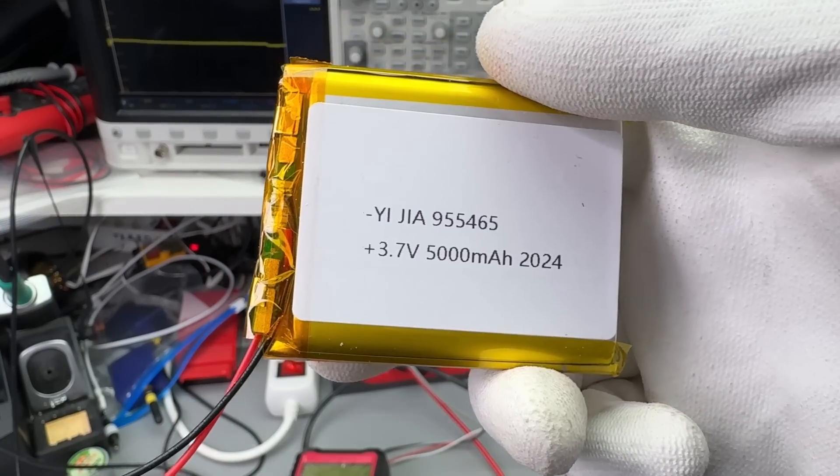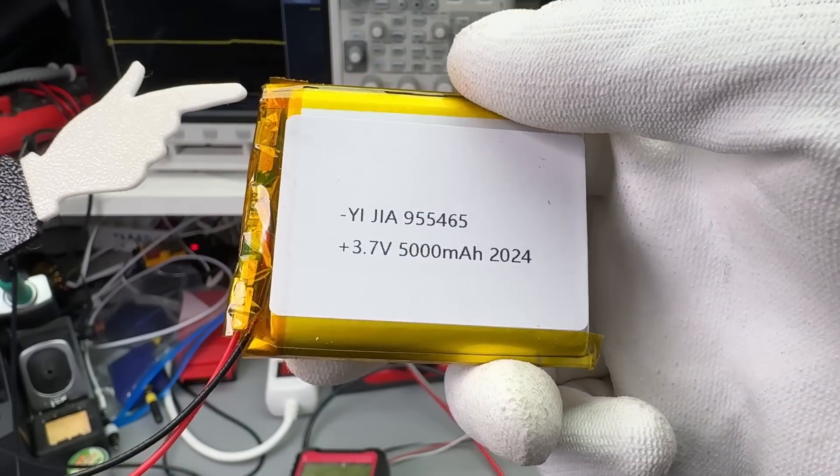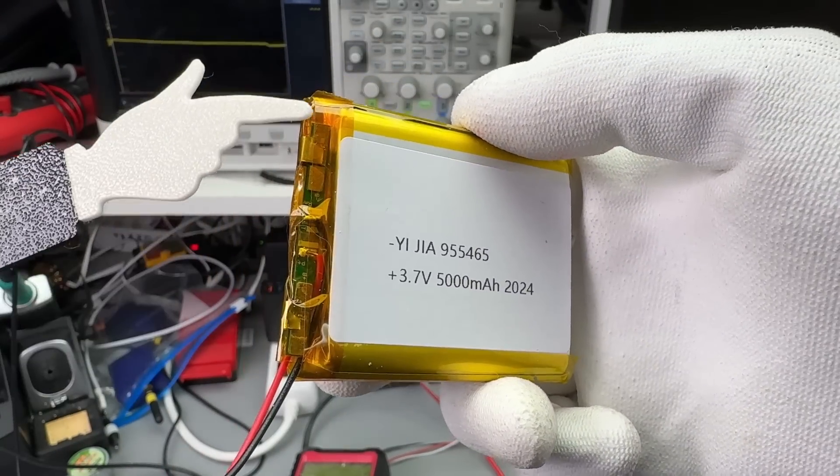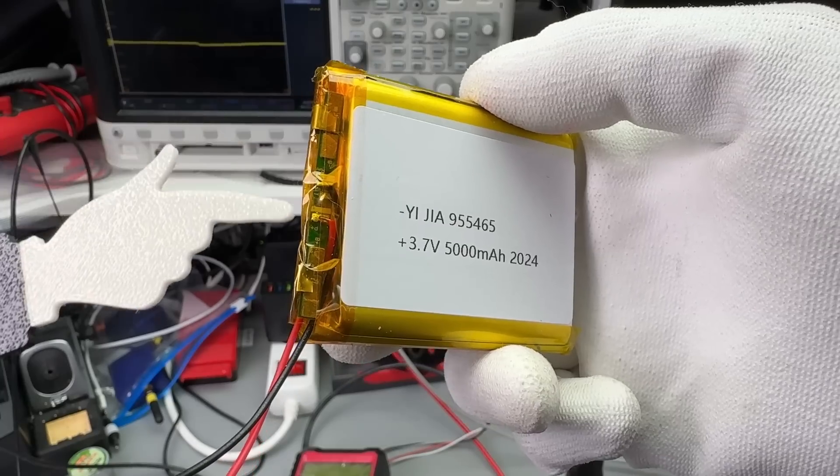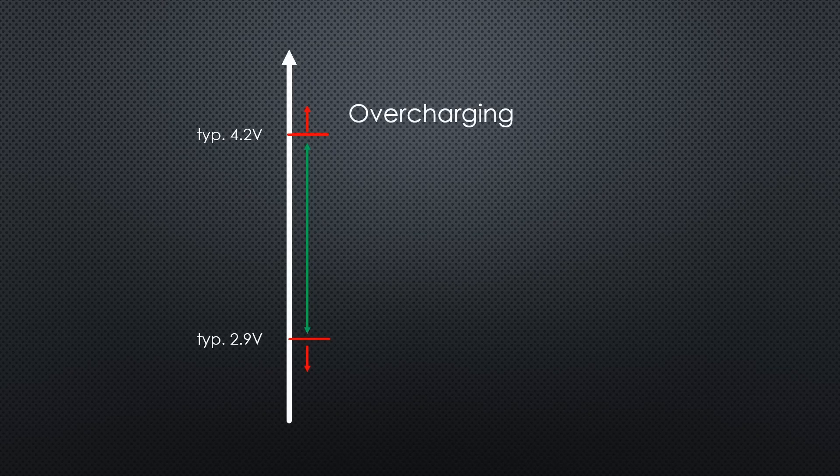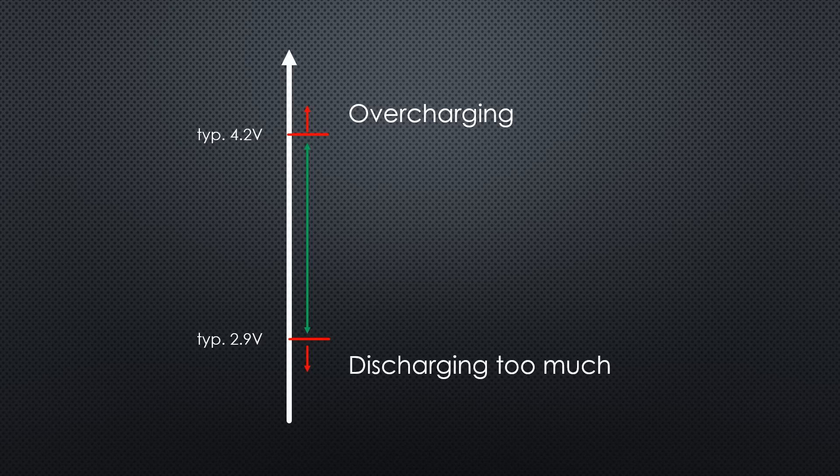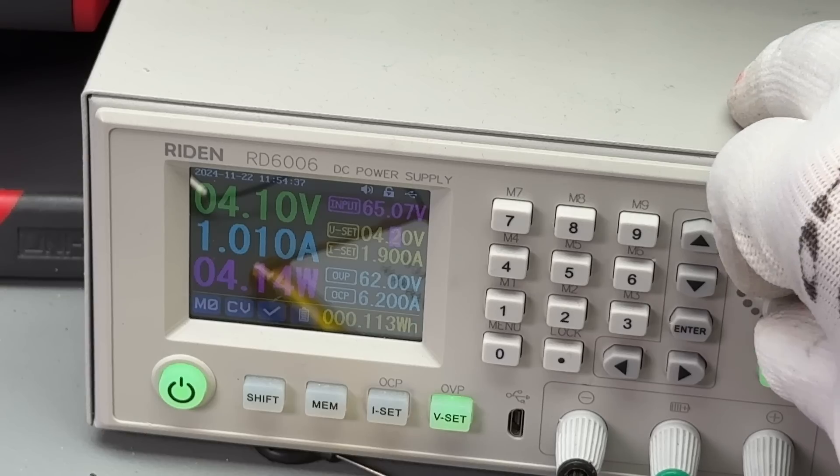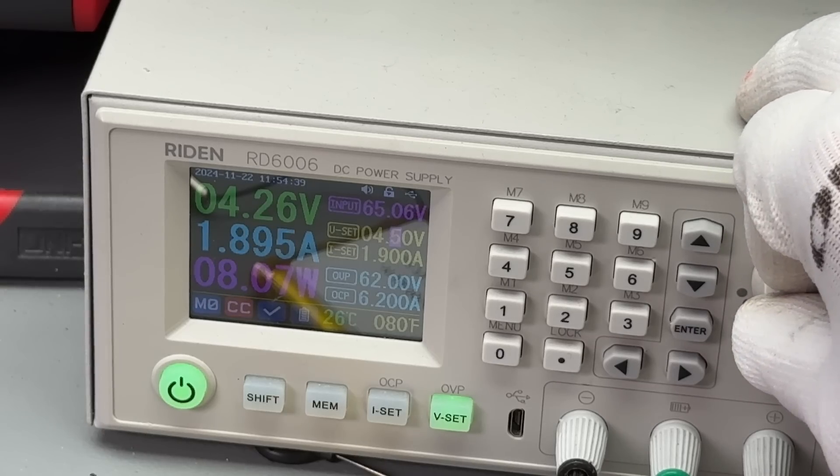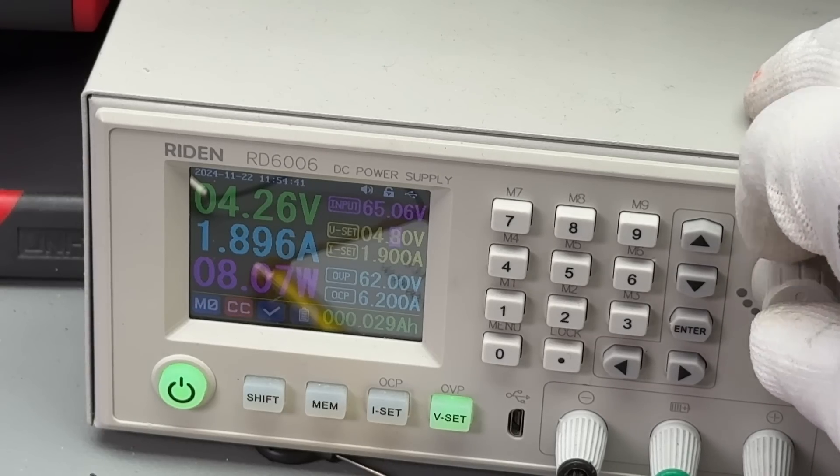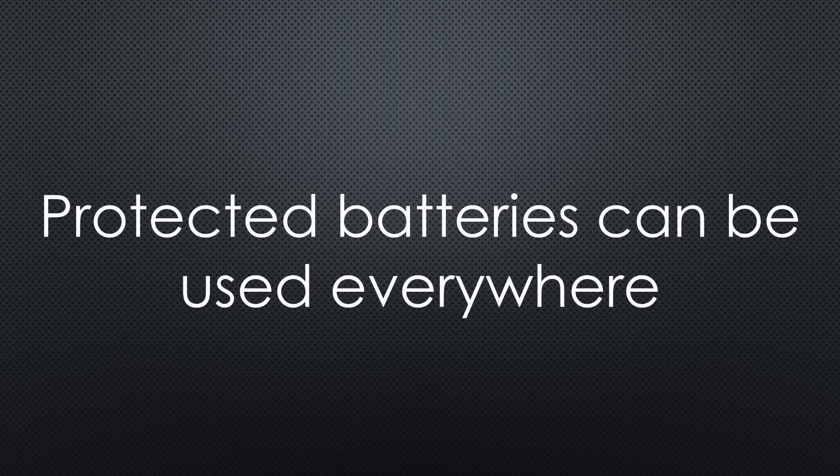These flat batteries usually come with a protection board included. Unfortunately, you must test them manually. Try to charge them above the maximum voltage or discharge them below the minimum. To save time, I charge or discharge them fully with an automated tool. Then, I continue charging or discharging manually and check if the protection board kicks in. If so, I can use it in unprotected applications.